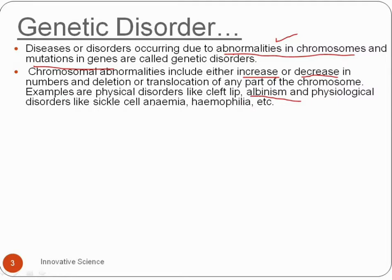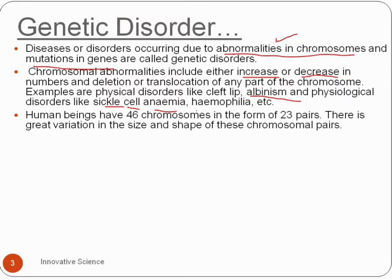Physiological disorders include sickle cell anemia and haemophilia. Human beings have 46 chromosomes in the form of 23 pairs, with great variation in the size and shape of these chromosomal pairs.